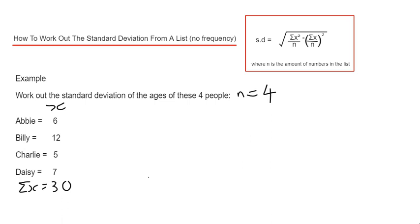Now we need to work out sigma x squared. To do this, first we need to square our ages. 6 squared is 36, 12 squared is 144, 5 squared is 25, and 7 squared is 49. If we add these up, that will give us sigma x squared. So 36 add 144, add 25, add 49, gives a total of 254.